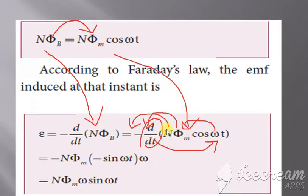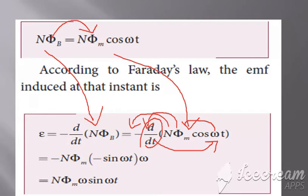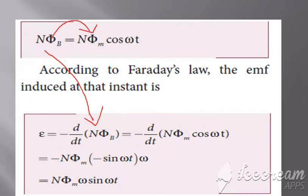Already we have the minus sign, so writing the minus as it is, and the differentiation of cos(omega t) gives minus sin(omega t) times omega. So minus times minus becomes positive, giving us N·phi_m·omega·sin(omega t). This gives the value of the EMF. Is that clear — how to differentiate cos(omega t)?